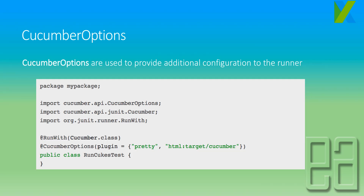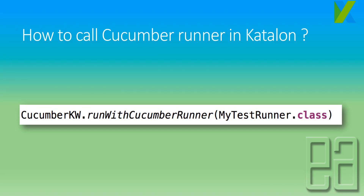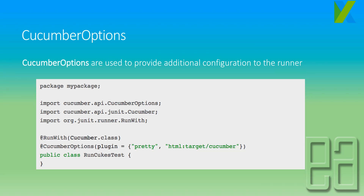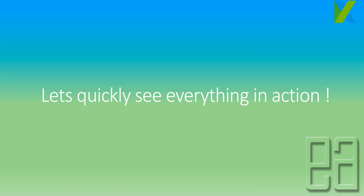But how are we going to call this runner in Katalon Studio? To call this particular class, we have to use what is called as CucumberKW — the static method or variable of Cucumber's extension API. We need to call the runWithCucumberRunner method to invoke the runner class we've created, which will execute all the feature files defined within the CucumberOptions and also generate the report for us. Let's see everything in action.